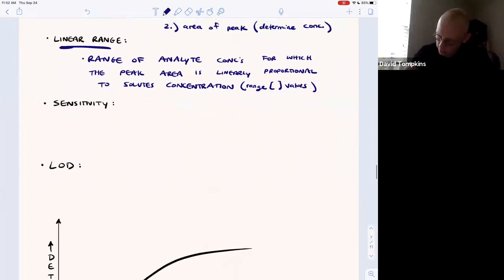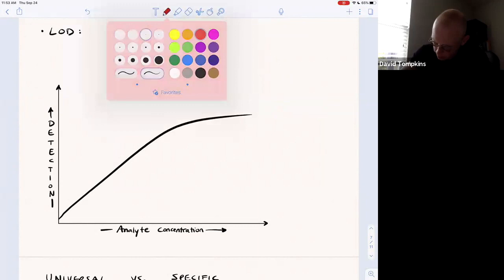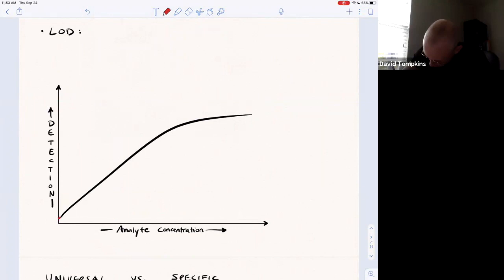So the linear range. This is going to be the portion of the following curve where we have detection as a function of analyte concentration where we have a constant slope. So it's about this range of x values here.